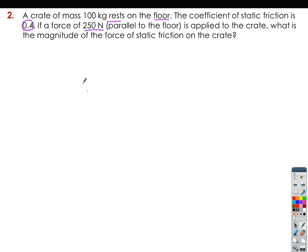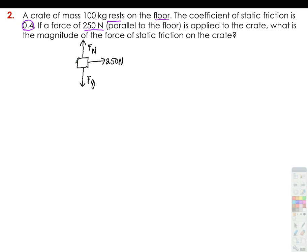Let us show our free body diagram to visualize what is going on. We have a crate with a force of 250 newtons being applied — let's say a push going to this direction — and since it's on the floor, there will be a normal force going up, our weight going down, and on the floor there is a friction F of F. The question is: what is the magnitude of the force of static friction?